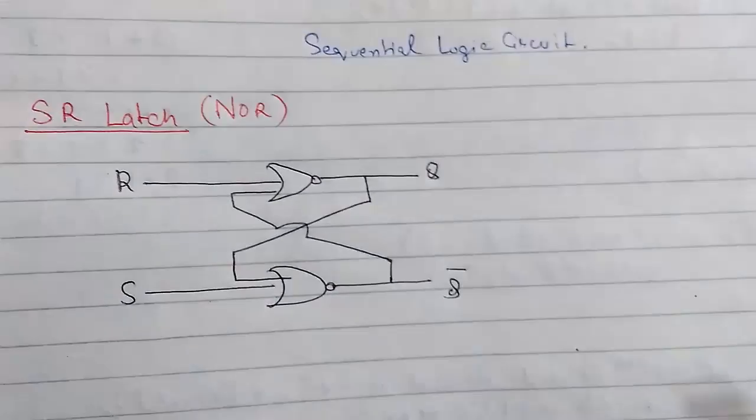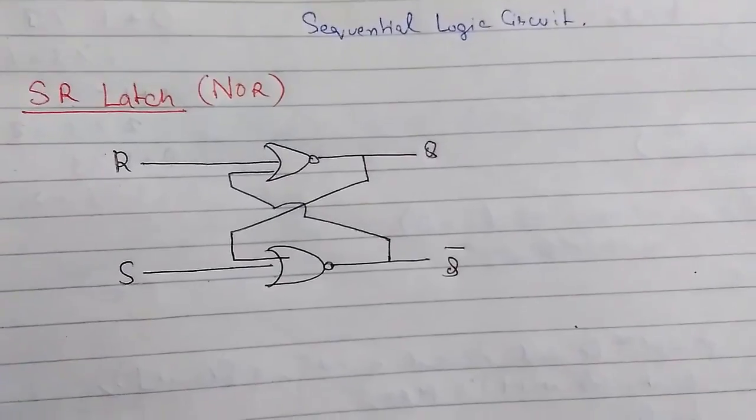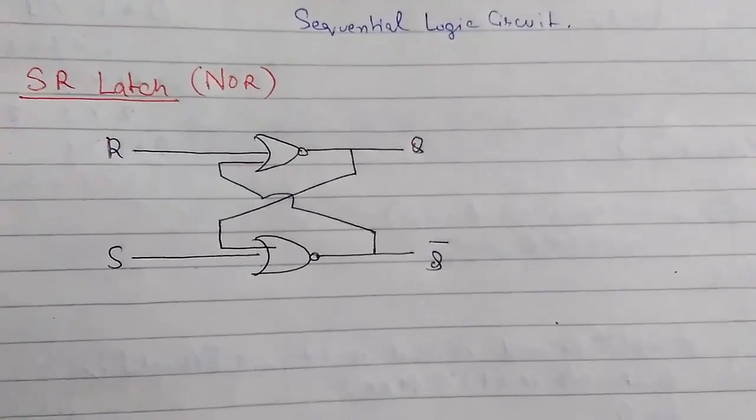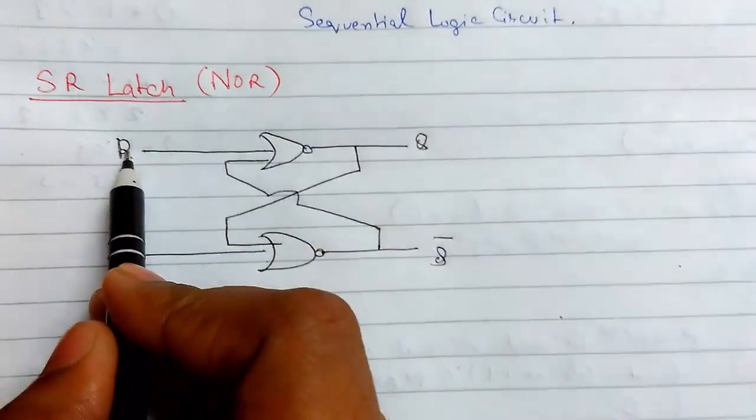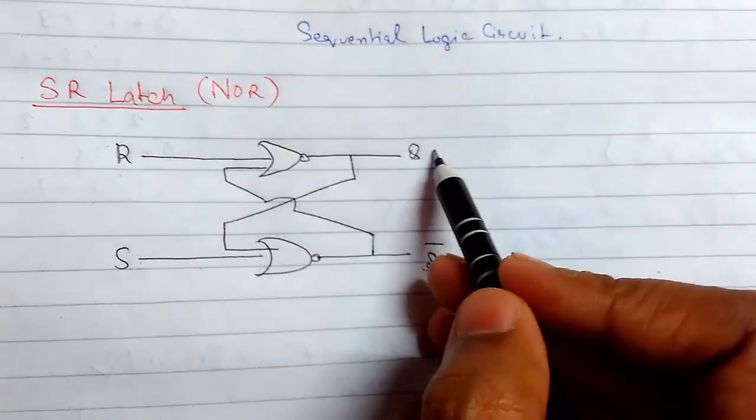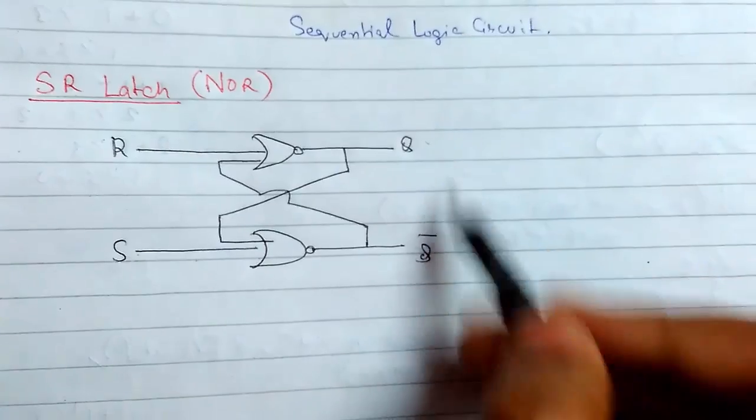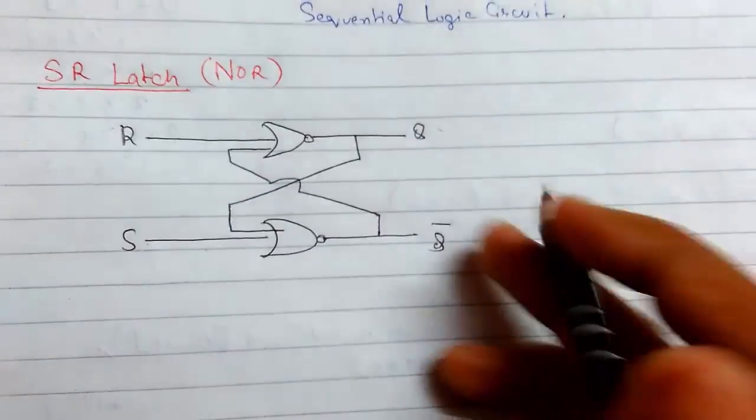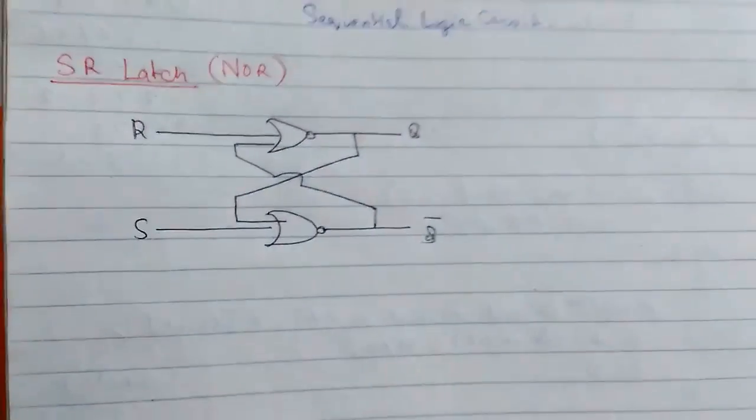This is our SR NOR latch or the memory cell. This is the set, this is the reset input. This is the Q and this is the Q bar output. Both must be opposite. So if Q is 1 then Q bar must be 0 and we will verify this result.